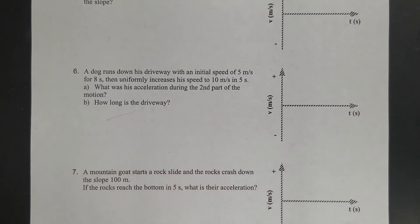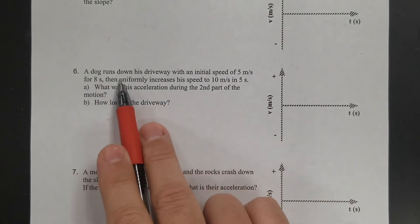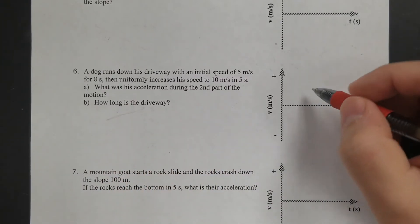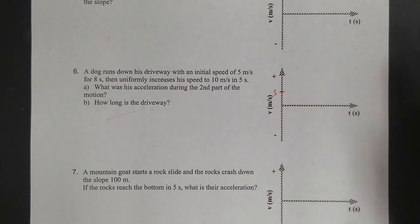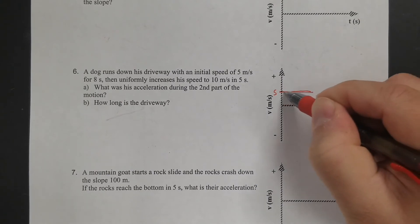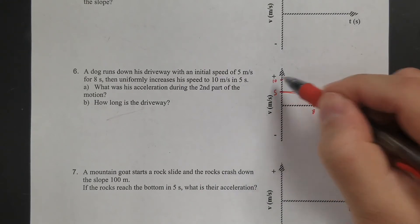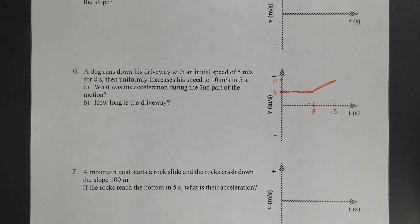Okay, last one. So I'm picking probably the most complicated looking one. So Dog runs down his driveway with initial speed of 5 meters per second for 8 seconds. And then he's going to increase his speed to 10 meters per second in 5 seconds. What's the acceleration during the second part? And how long is the driveway? So there's two distinct parts in this problem. So I'm going to do the graph again first. So the kid is going, or the dog is going, 5 meters per second. And he does that for 8 seconds. So at 8, so my line, my original graph is going to look like this: 5 meters per second for 8 seconds. And then he's going to increase his speed to 10 meters per second in 5 seconds. So if this is 5 seconds, that means this needs to be 13. And he's going to go to 10. So my graph looks like that.